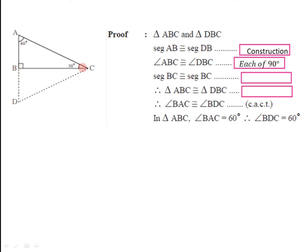Segment BC is congruent to segment BC as it is a common side for both of these two triangles. So here we have two sides and the angle between them. That's why these two triangles are congruent by the SAS test.